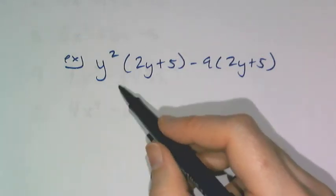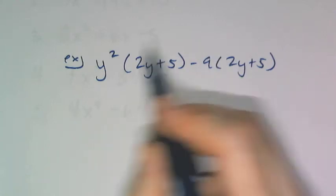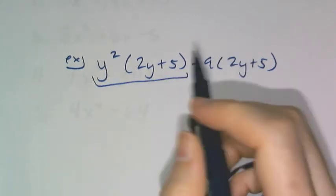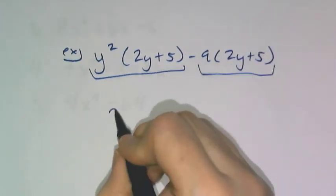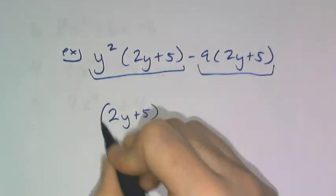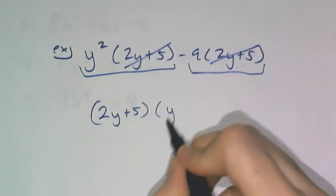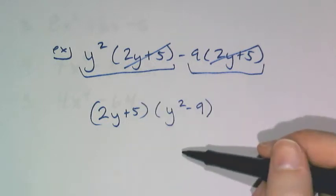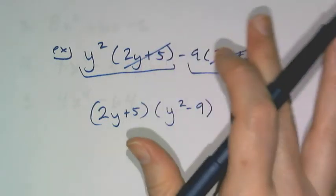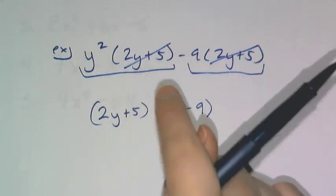I have y²(2y+5) minus 9(2y+5). And I see that it's like halfway grouped for me. And of those two groups, the 2y plus 5 is common. And then I'm left with y² minus 9. Now if you box off and happy face this answer, you did not factor completely. Remember, you always check your factors to make sure you can't factor them further.